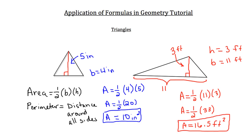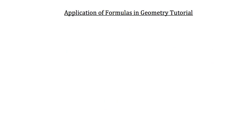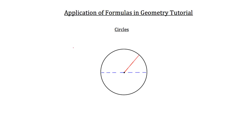The last type of figure is circles. There are a couple of important things to know. The distance from the center of a circle to any point on its edge — shown here as a red line — is called the radius.